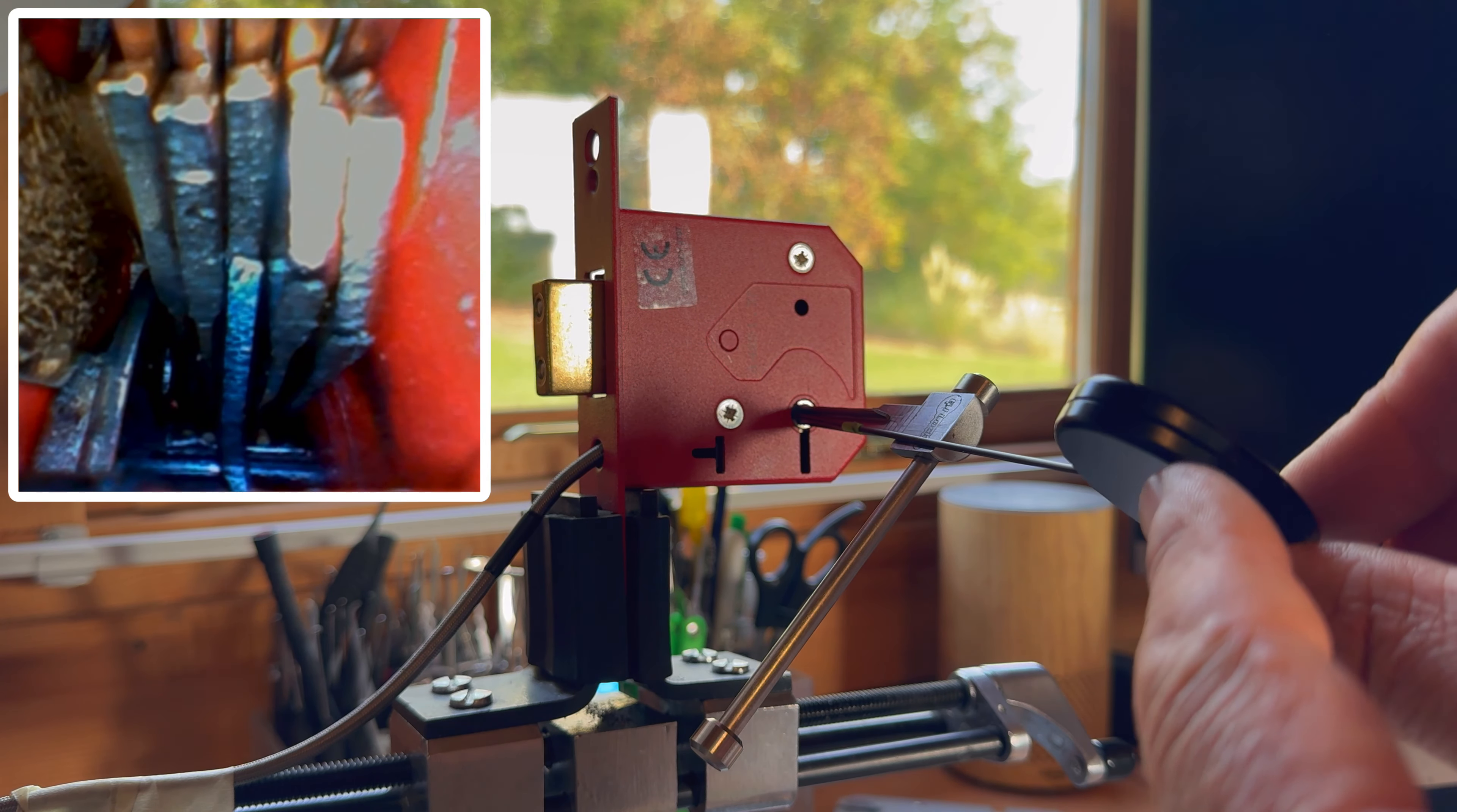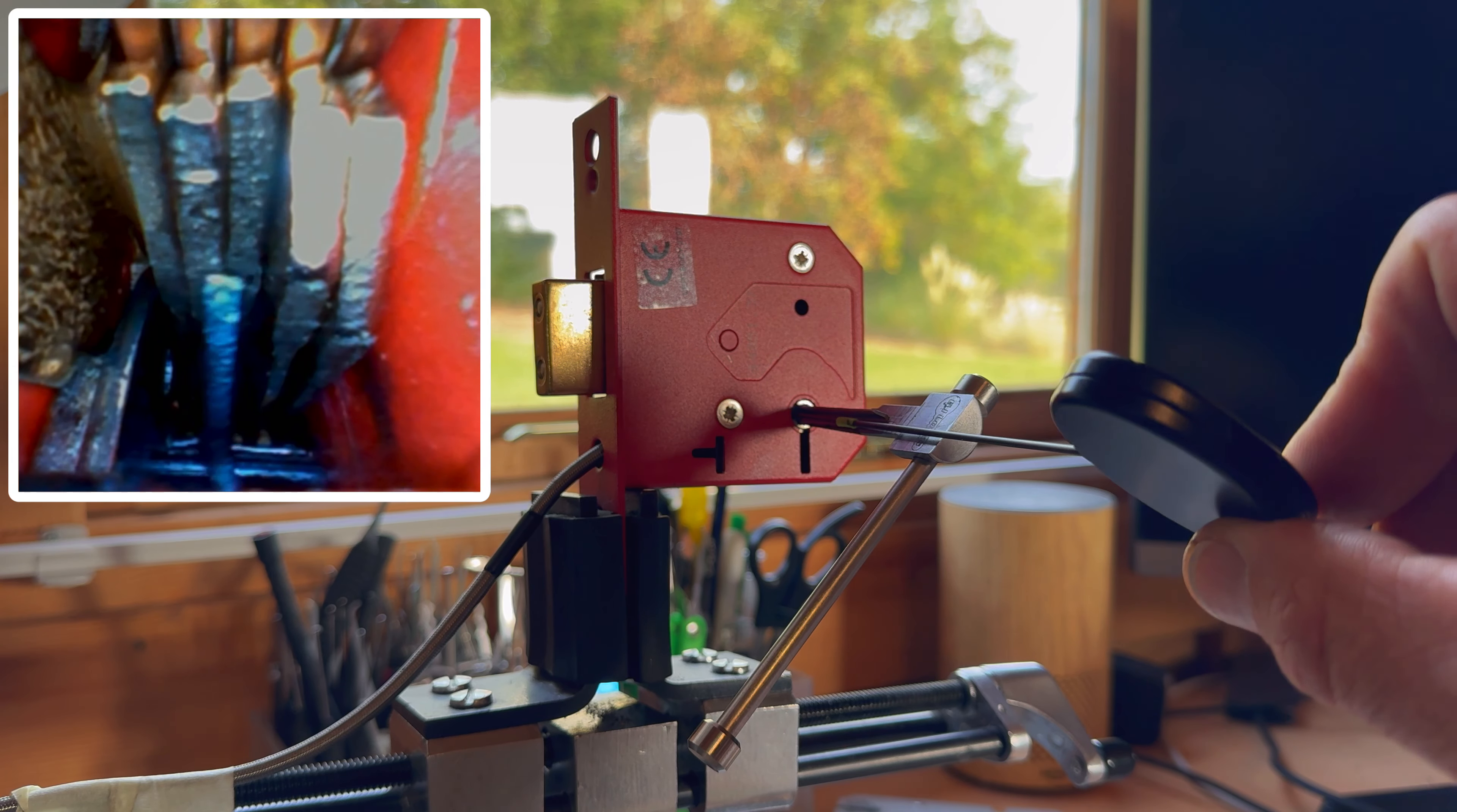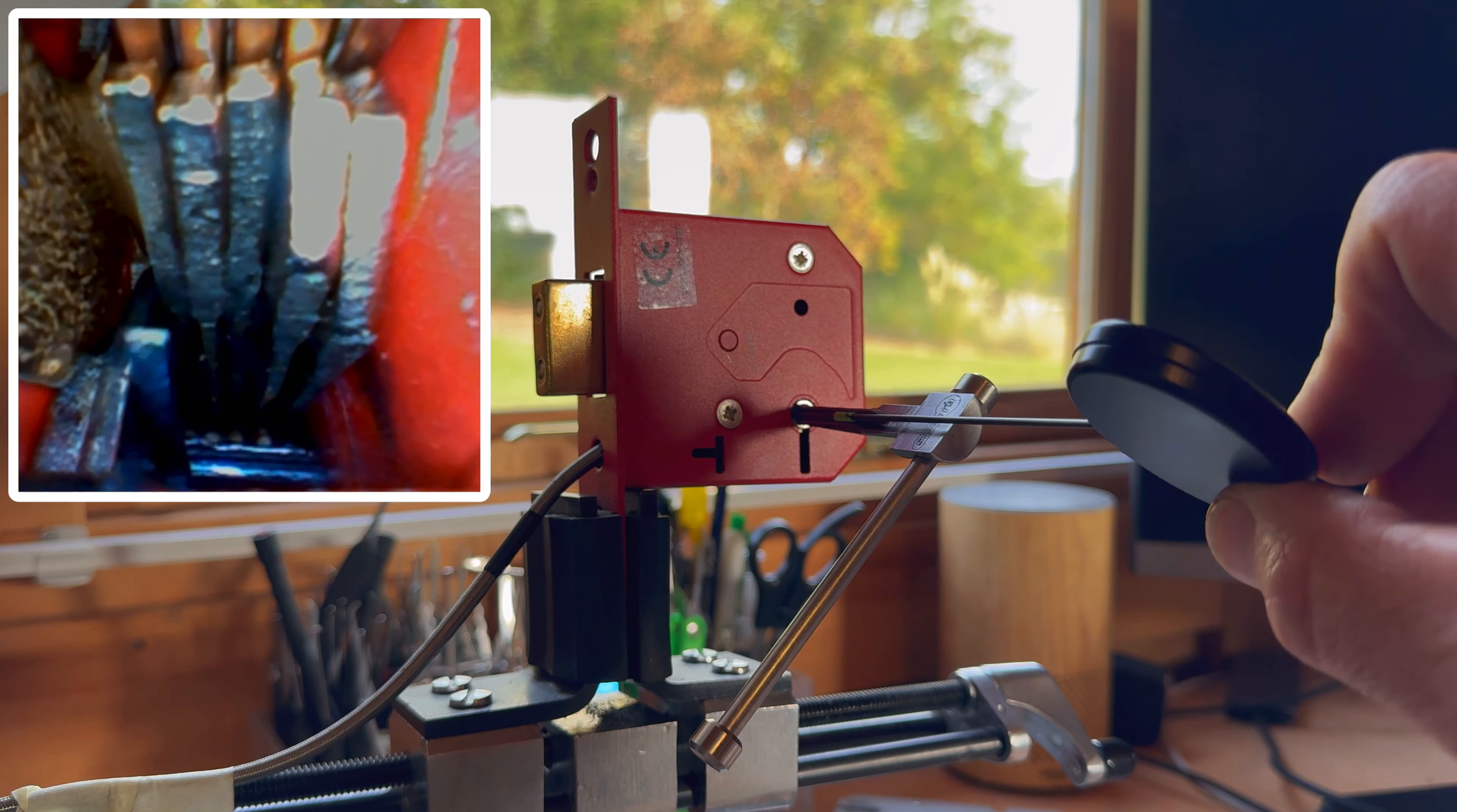We can go by the angle on this pick to determine roughly what we've got in there. The greater that angle, the higher the lift the lever. The lower that angle, the lower the lift the lever. So almost immediately I get a good idea of what I need to do to get this lock open.